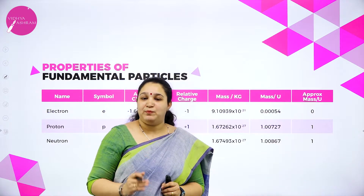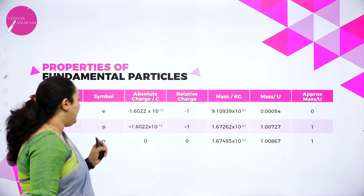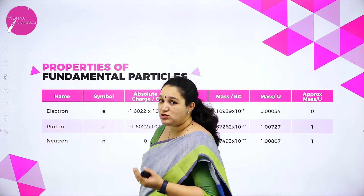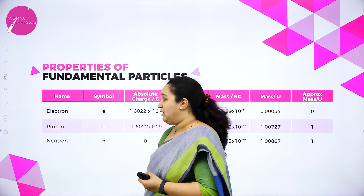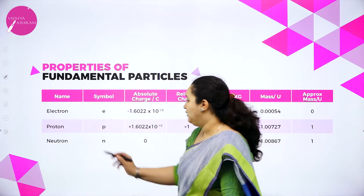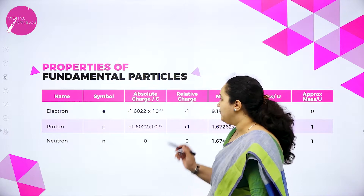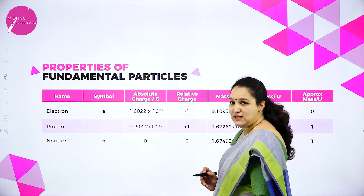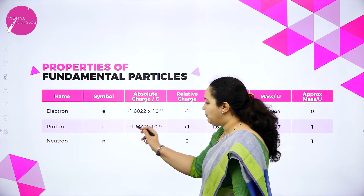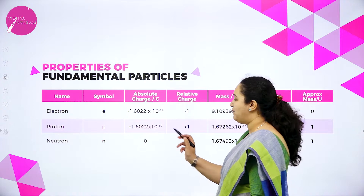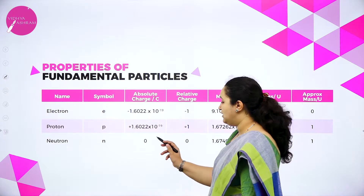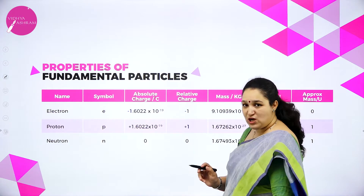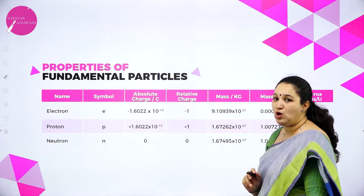We will see the properties of fundamental particles. We have three fundamental particles: electrons, protons, and neutrons. They are also called as subatomic particles. Electron has symbol e, proton p, and neutron n. The charge on electron is minus 1.6022 × 10⁻¹⁹ C, whereas for proton it is the same value with positive charge. Neutron has no charge. In relative terms: electron is minus 1, proton is plus 1, neutron is 0.